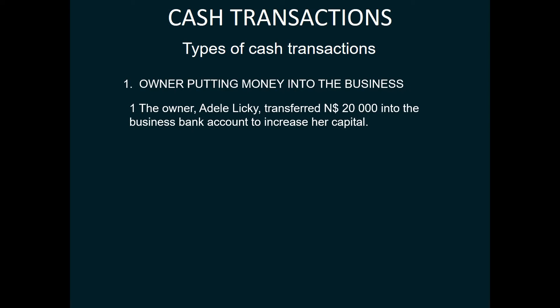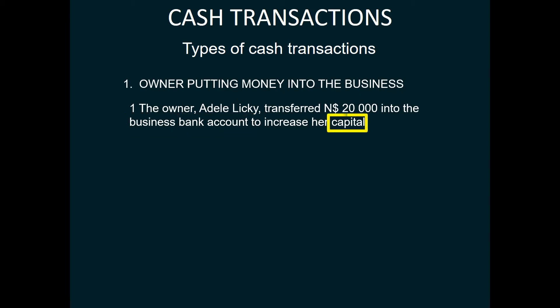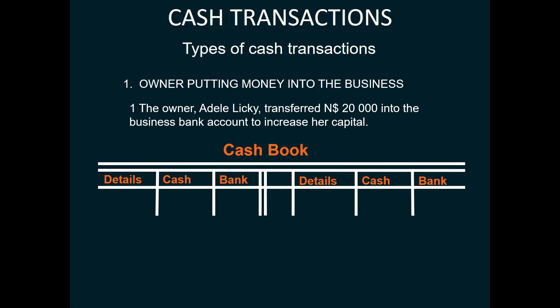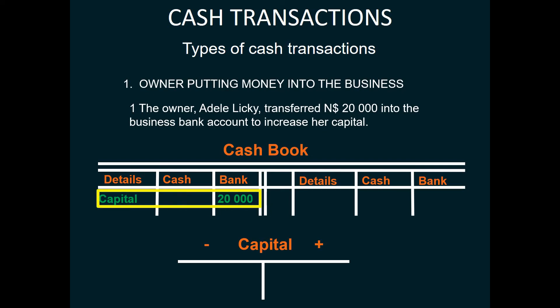Now we need to identify two accounts. We can identify the bank account, and also we can identify the account named capital. Now we know that the cash book will be part of this transaction because it's a cash transaction, and cash transactions can either be cash or bank. The second account we identified was capital. Since the money was transferred into the business's bank account, it should come in the bank column on the debit side. So the 20,000 is recorded on the debit side of the cash book, which means the company has received money. And to complete the double entry, we will have an entry of 20,000 on the credit side of capital.